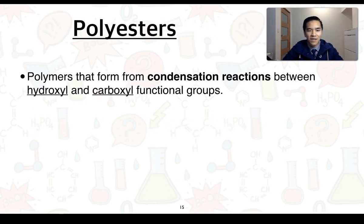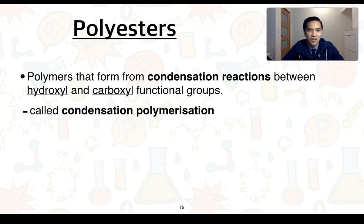Polyesters are classified as polymers, and these polymers can form from condensation reactions that occur between hydroxyl and carboxyl functional groups. This is often called condensation polymerization.